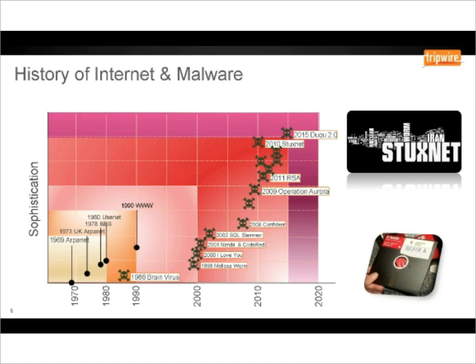Looking at the various types of attacks we experienced back in the 80s and 90s, the first being the PC Brain virus — the first PC-compatible virus distributed on a five-and-a-quarter-inch floppy disk — all the way up to modern day attacks. Specifically, we're going to talk about the DQ-2 attack that Kaspersky experienced earlier this year.